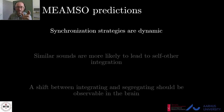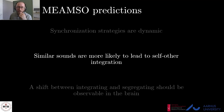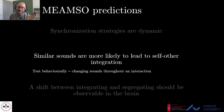This model makes quite a few predictions; here are three. First, synchronization strategies are dynamic, meaning they can change and readjust during an interaction, perhaps depending on multiple parameters — I plan to combine MEANSO and the Kuramoto model to perturbate simulated interactions and verify with experiments. Second, similar sounds are more likely to lead to self-other integration, meaning that playing together with similar sounds should lower the threshold for self-other integration. This can be tested by, for instance, adjusting sounds during a joint finger tapping task.